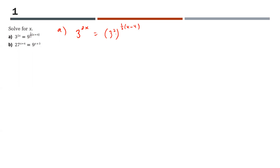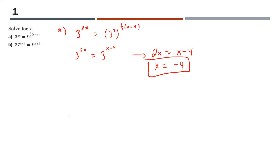On the right-hand side, a power of a power means you multiply the exponents together. So this becomes 3 to the power of 2x equals 3 to the power of x minus 4, since 2 times one-half cancels out. Now, since they have the same base, we can ignore the base: 2x equals x minus 4. Subtract x from both sides, and x equals negative 4.